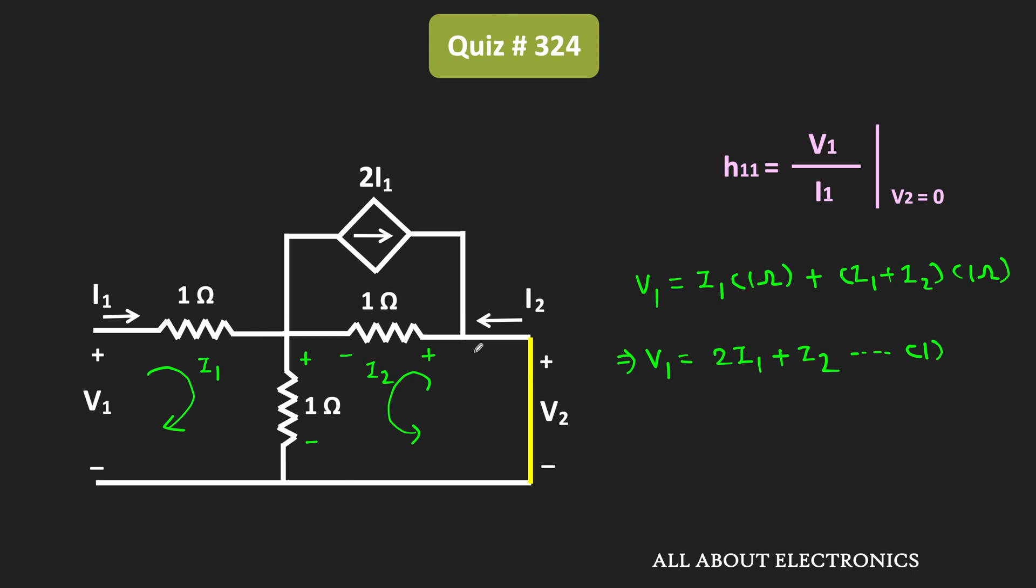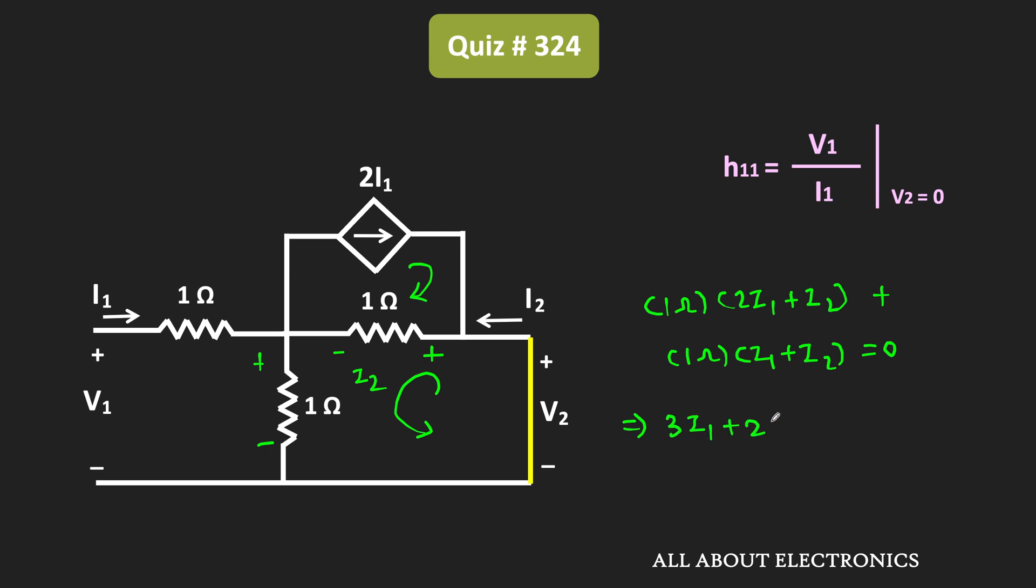Similarly, now let us apply the KVL equation in this loop. So here, the current in this loop is equal to 2I1, while in this loop, the current is equal to I2. So if we apply the KVL in this loop, then we can write 1 ohm times 2I1 plus I2, that is the voltage drop across this 1 ohm resistor, plus this 1 ohm times I1 plus I2, and that is the voltage drop across this resistor. So from this, we can say that 3I1 plus 2I2 equals 0. That means I2 is equal to minus 1.5 times I1, and let's say this is equation number 2.